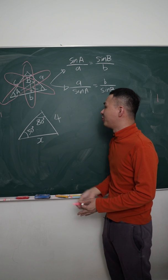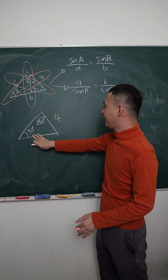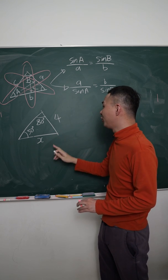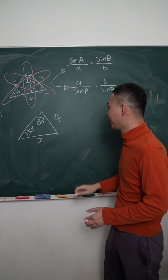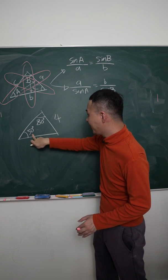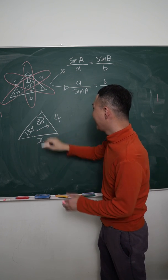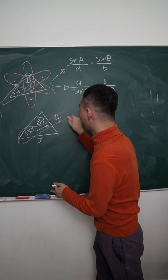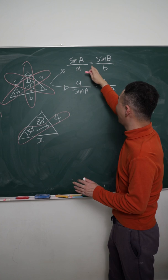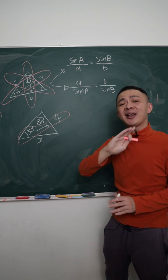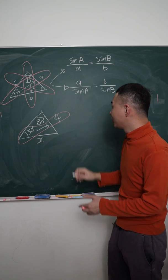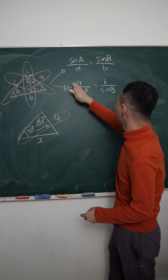Let's look at an example with 50 degrees, 80 degrees, length X and 4. First, ask: should I use the sine rule? I need one combination. With 80 degrees, I don't have the opposite length. With 50 degrees, I do have the opposite length 4 — that is one combination, so I can use the sine rule. Since I want to find the length X, I will use the second formula.